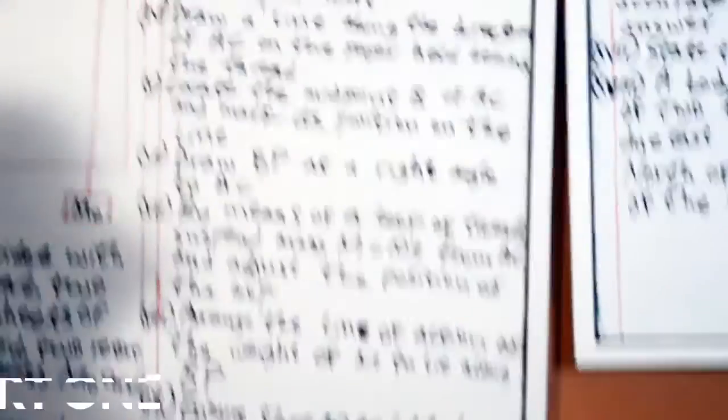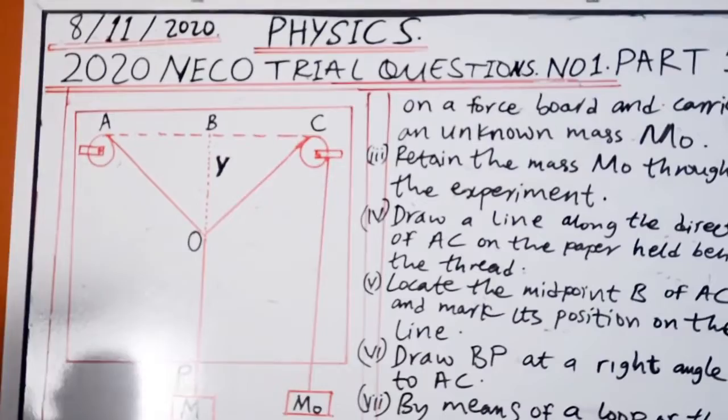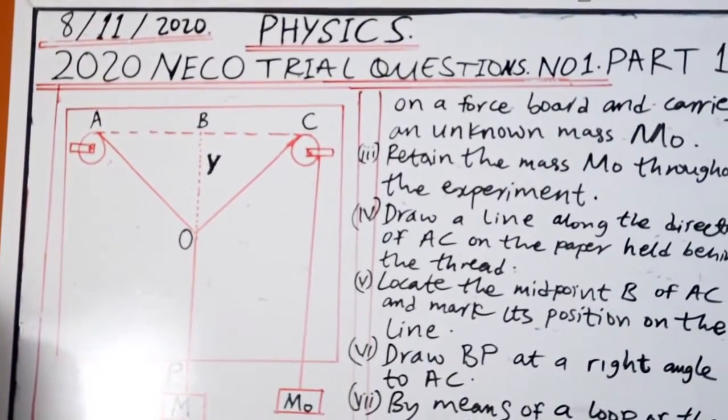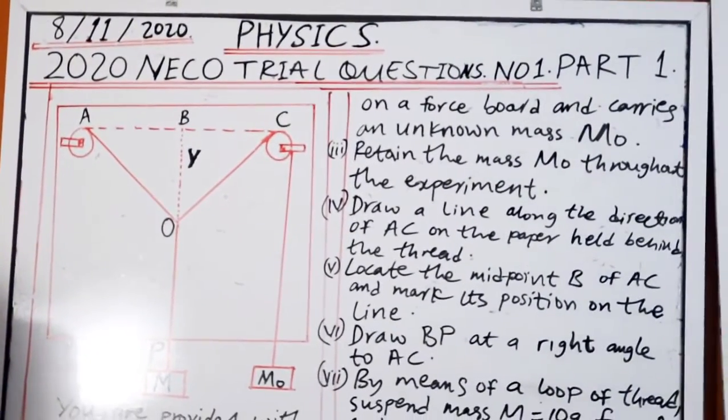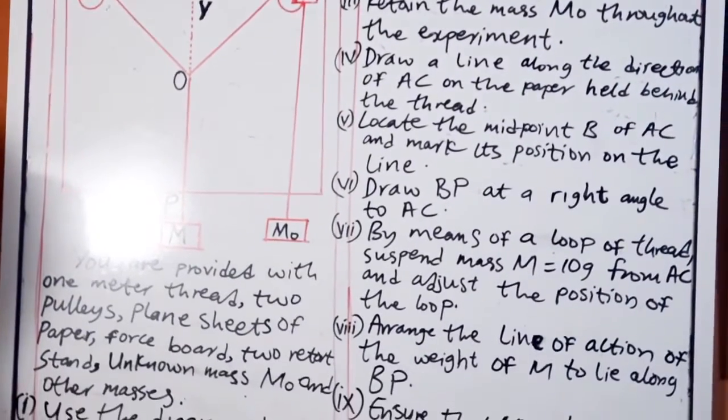Question number one, part one. You are provided with one meter thread, two pulleys, plain sheets of paper, force board, two retort stands, unknown mass, air code and other masses.